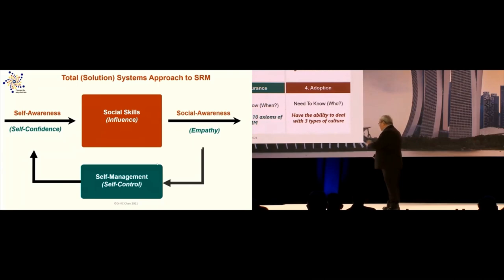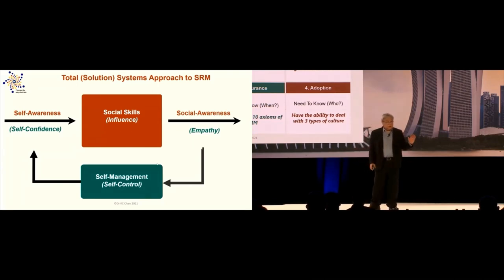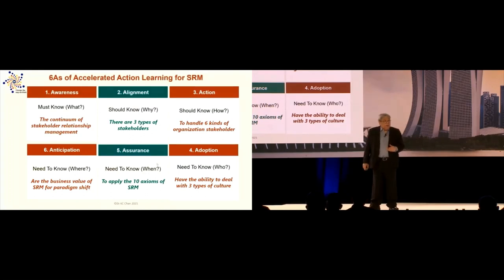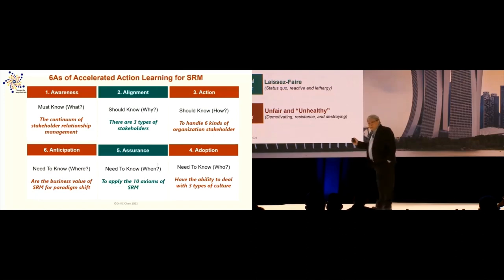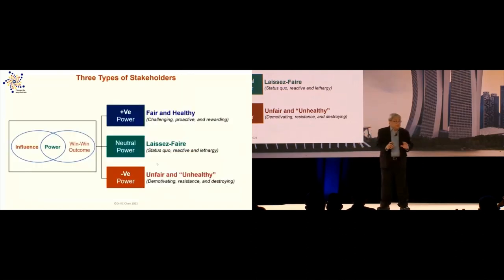Once we have this, these are the six processes about transforming ourselves from less concern about stakeholder relationship management to becoming more concerned. There are three types of stakeholders in any environment — actually four types, but three is good enough. I'll go through them one by one.